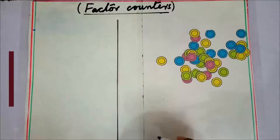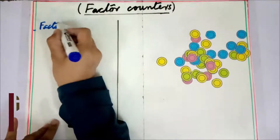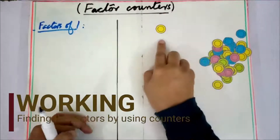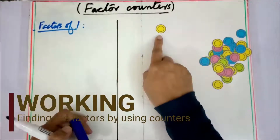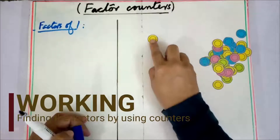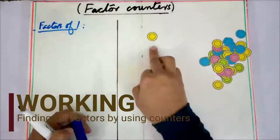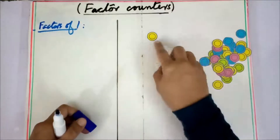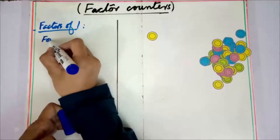Now I am going to find out the factors of one. You will see that you can only make one group of one. How many even groups can you make with the given number? Here you can only make one group, so the factor of one is one.